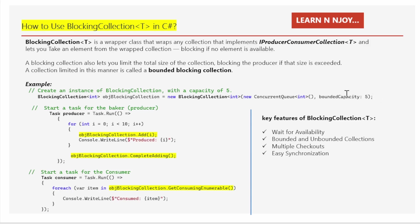This creates an instance of the BlockingCollection that stores integers. The new ConcurrentQueue<int> means the BlockingCollection is wrapping a thread-safe queue. And BoundedCapacity of 5 means this BlockingCollection has a capacity limit of five items.